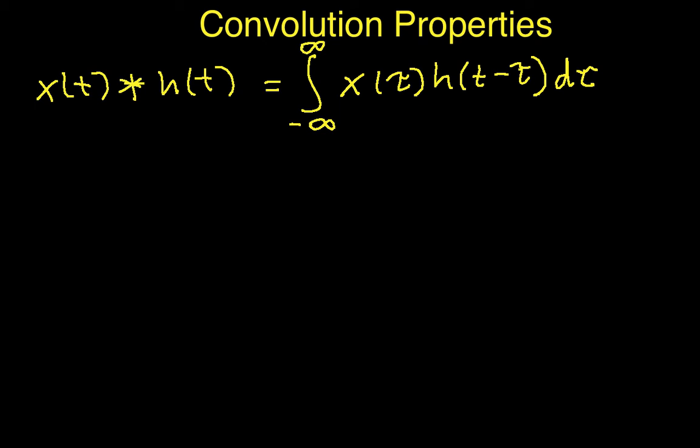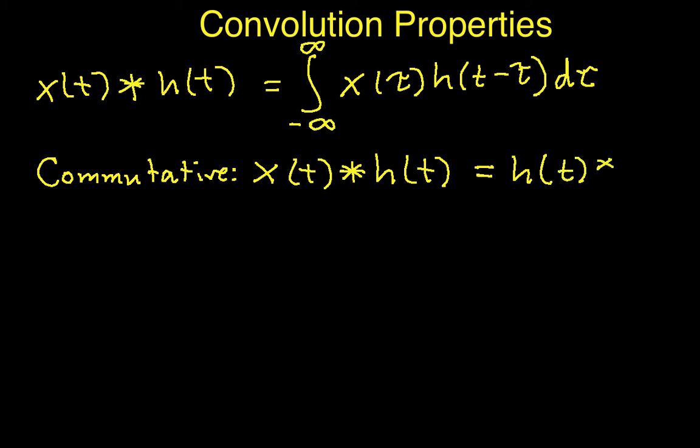So, the first property is commutativity of convolution. The idea here is that x of t convolved with h of t is the same as h of t convolved with x of t.